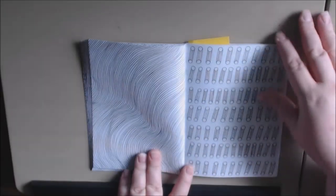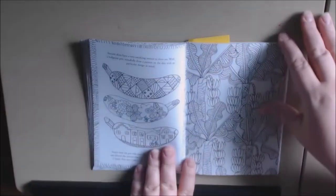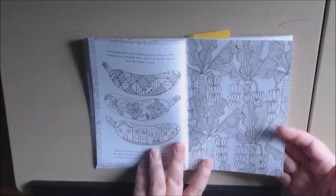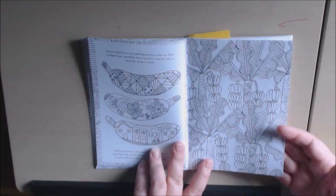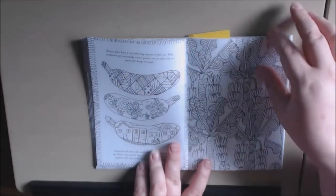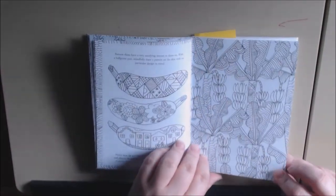I've got some cactus, some random objects. This one says banana skins have a very satisfying texture to draw on. With a ballpoint pen, mindfully draw patterns on this skin with no particular design in mind.